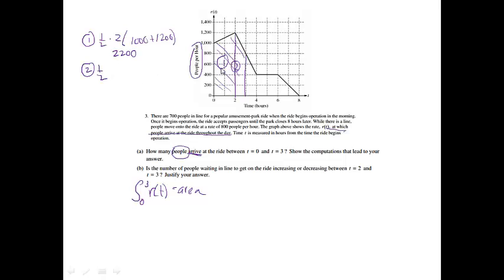Then trapezoid 2 is 1 half times the height. The distance between 2 and 3 is just 1. Base 1 is 1,200 and base 2 is 800. So that answer will be 1,000. If I add those two together, that will be 2,200 plus 1,000, which equals 3,200 people.